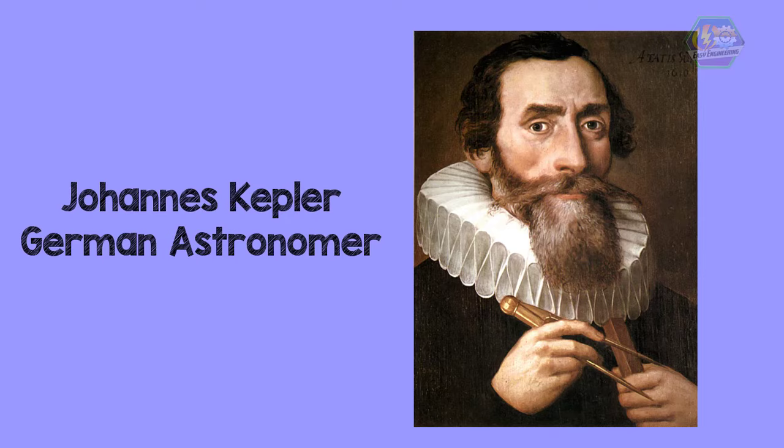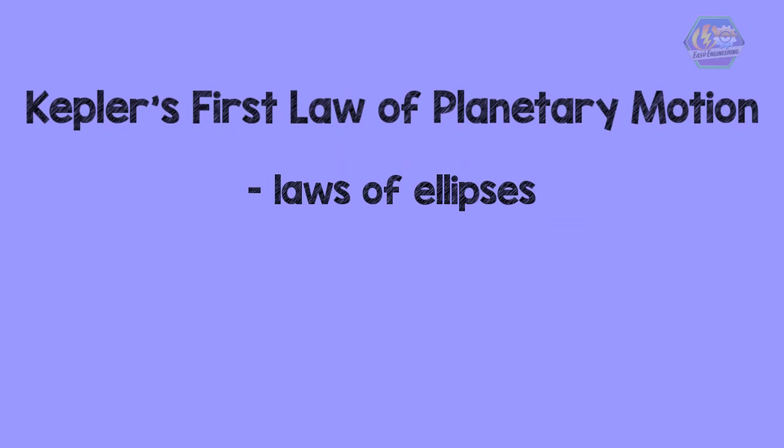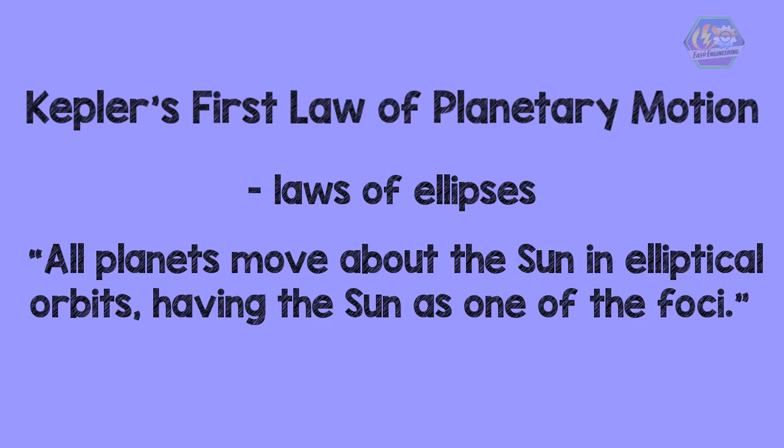Let us talk about them one by one. Kepler's first law of planetary motion, sometimes referred to as the law of ellipses, can be stated as: all planets move about the Sun in elliptical orbits having the Sun as one of the foci. This means that planets are orbiting the Sun in a path described as an ellipse.